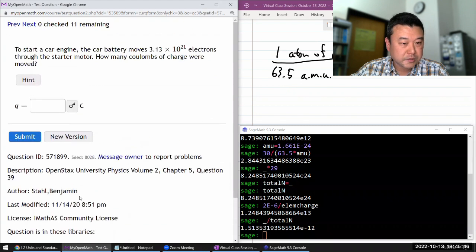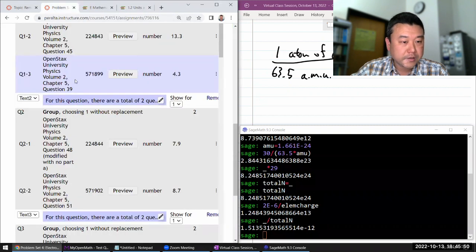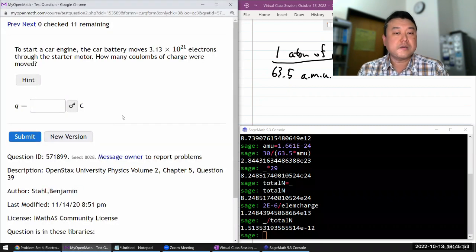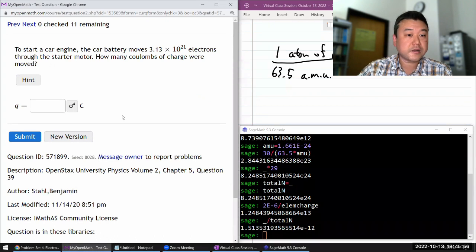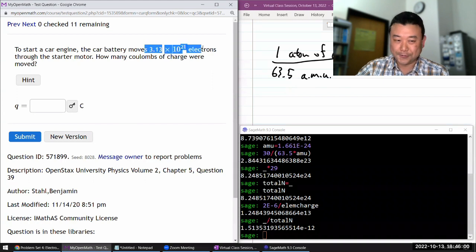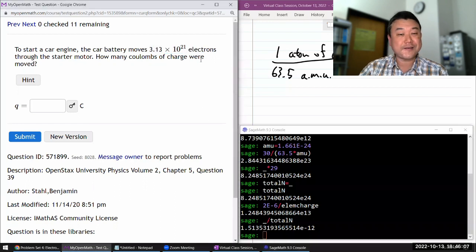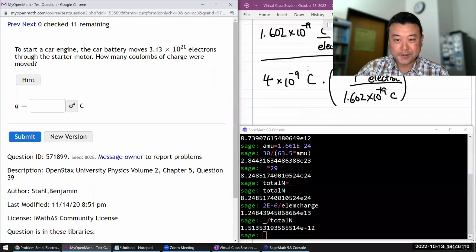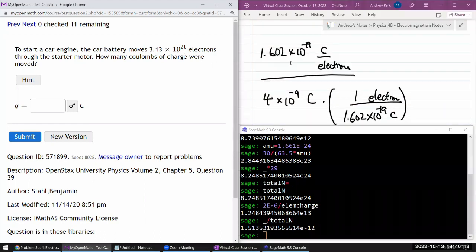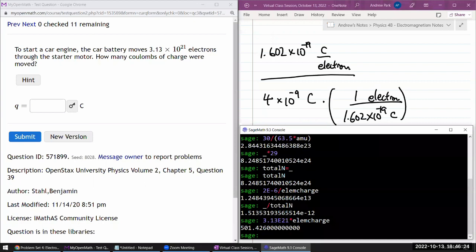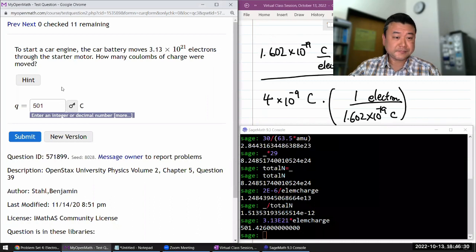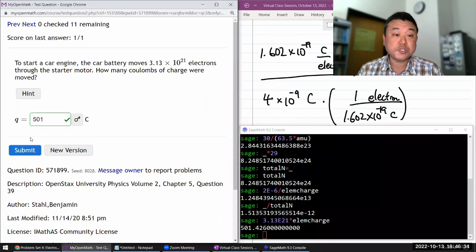This one says to start a car engine, the car battery removes 3.13 times 10 to the 21 electrons through the starter motor. That looks like a lot. I have to do the unit conversion this time from electrons to coulombs. I can take this and multiply with elementary charge. That'll give me coulombs. I think it is 3.13 times 10 to the power of 21 times elementary charge. 501.4 coulombs. That sounds like a lot, but I think that's actually correct.